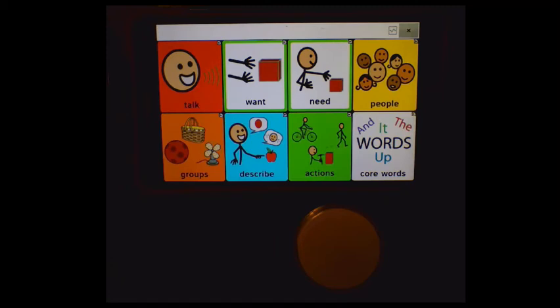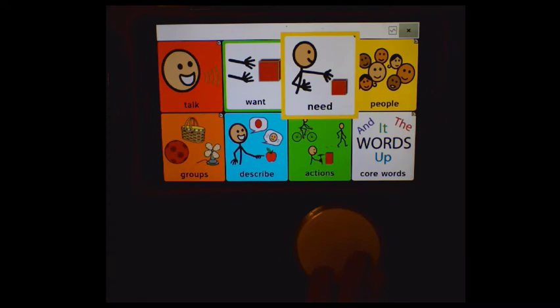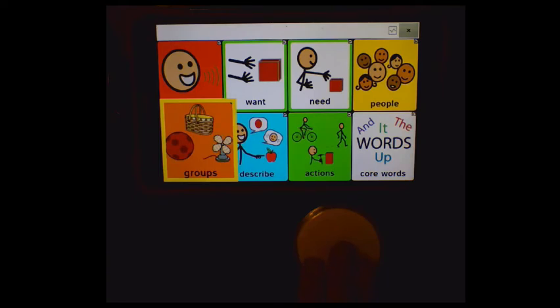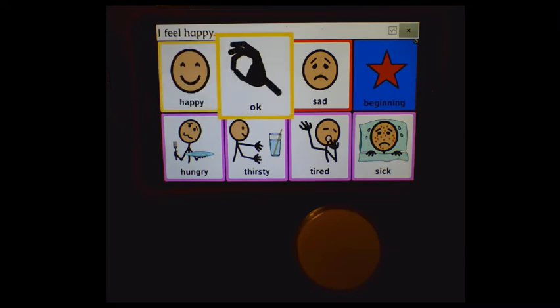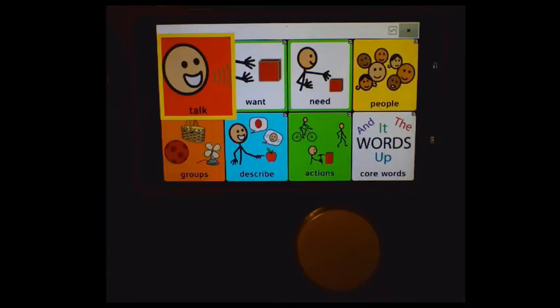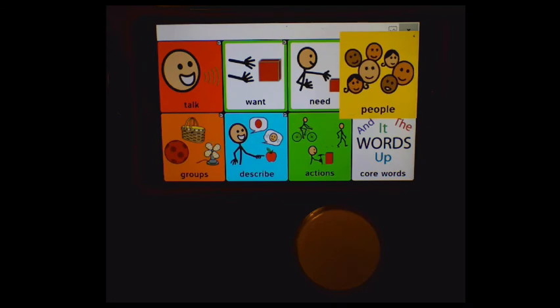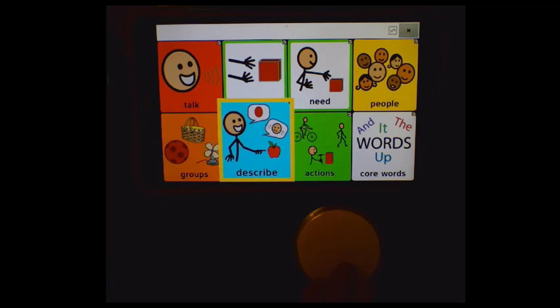The categories include Talk, Want, Need, People, Groups, and Describe. In the Describe category, there's 'I feel' with options for Happy, Okay, and Sad. The scanner cycles through Talk, Want, Need, Groups, Describe, and Actions.